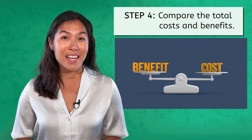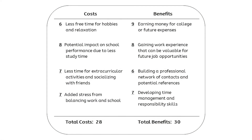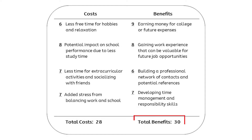For me, the numbers turn out like this. My total costs are 6 plus 8 plus 7 plus 7, which equals 28. My total benefits are 9 plus 8 plus 6 plus 7, which equals 30. So it looks like my total benefits are a bit higher than my total costs. Now, what should we make of this info?